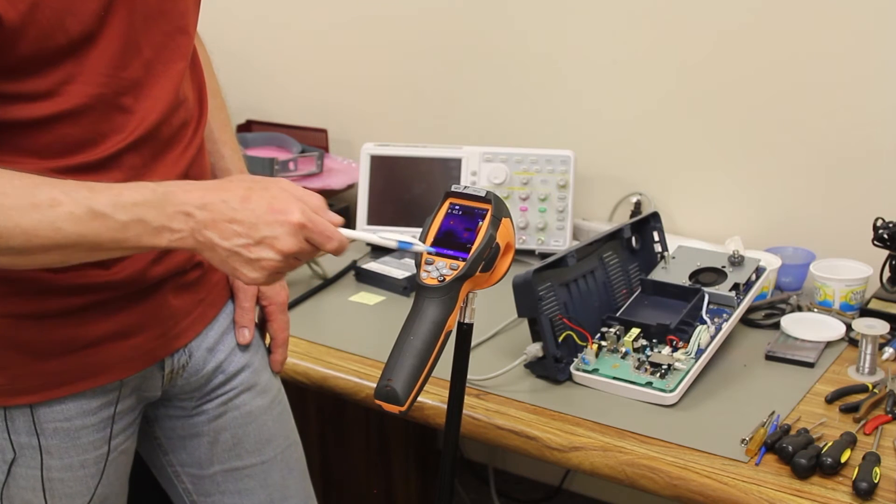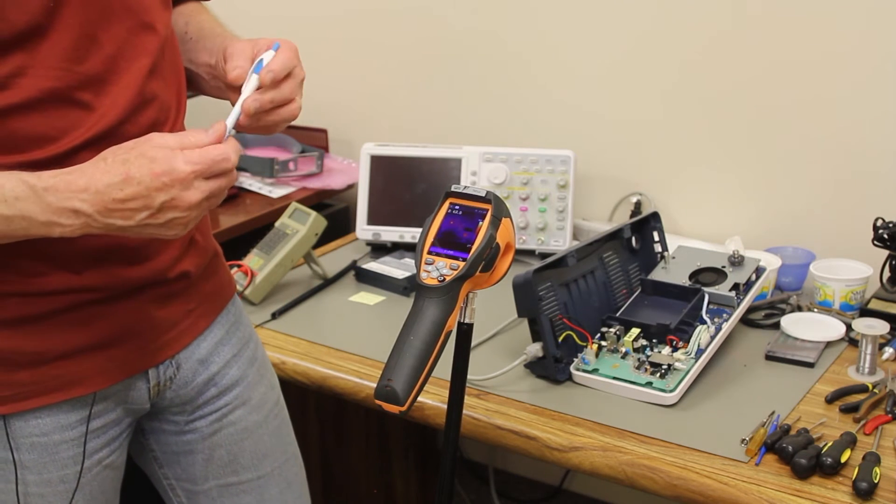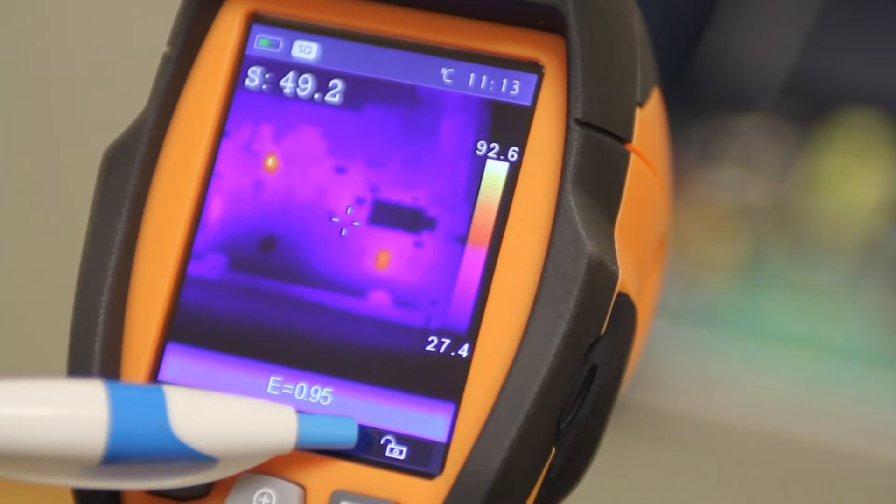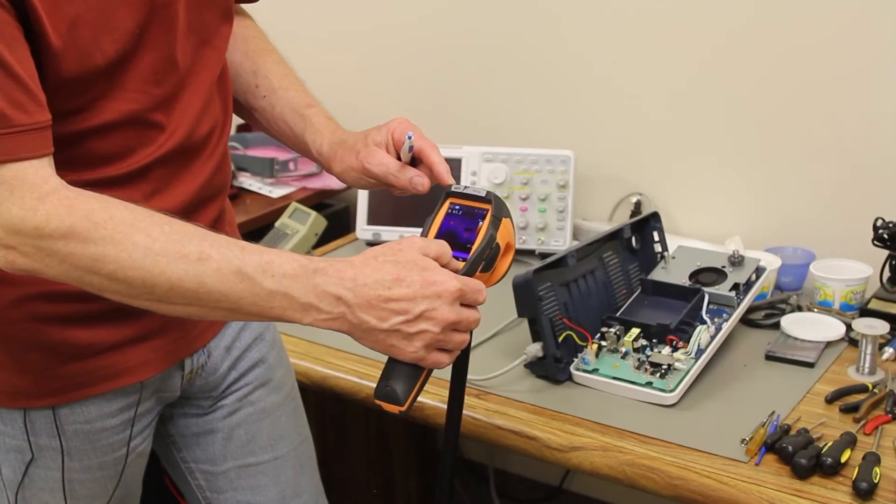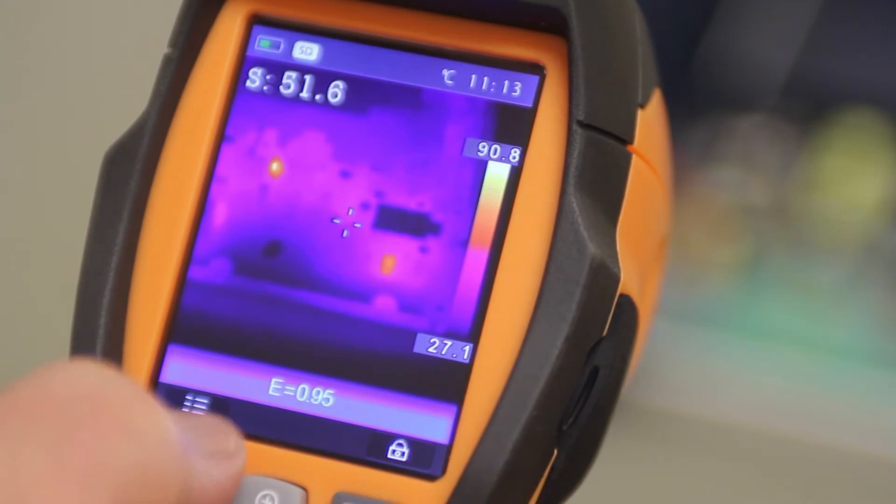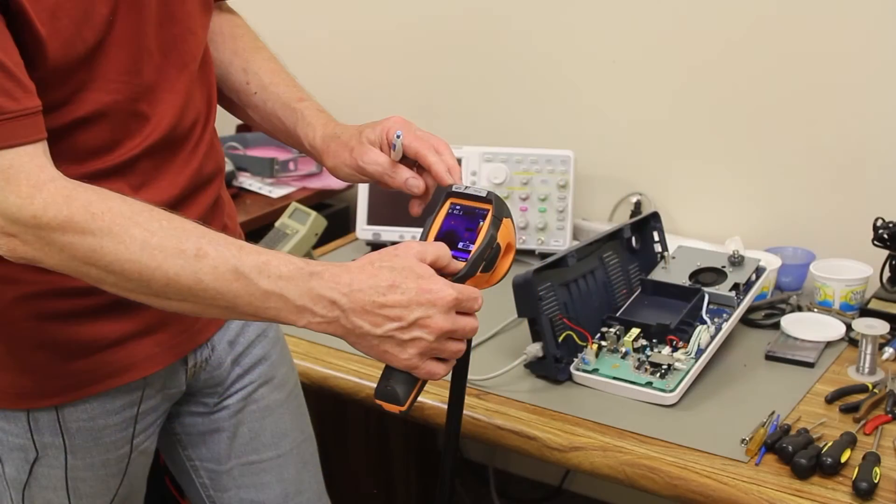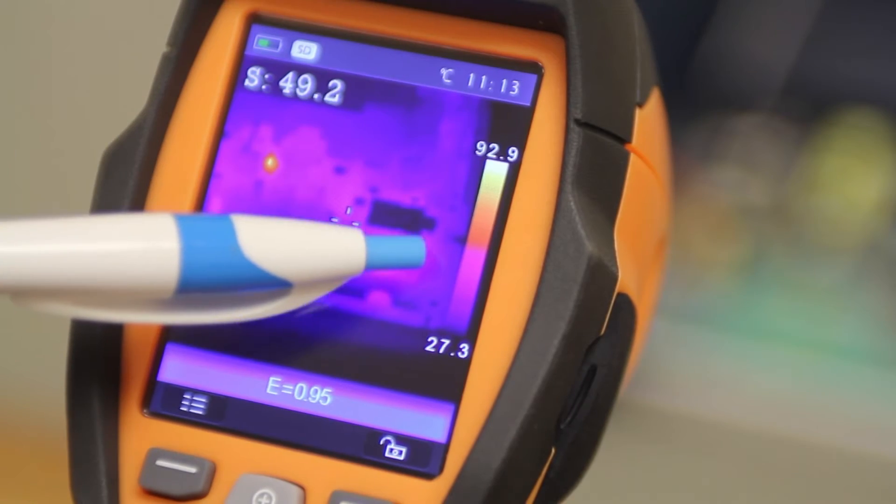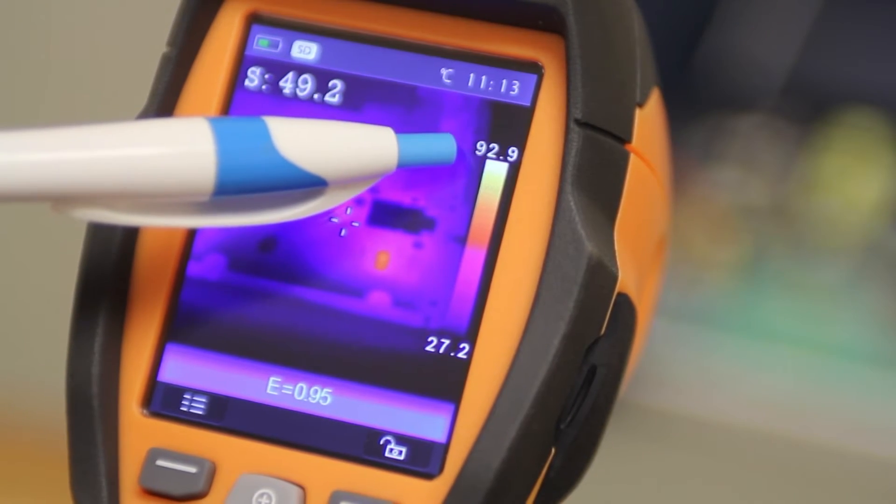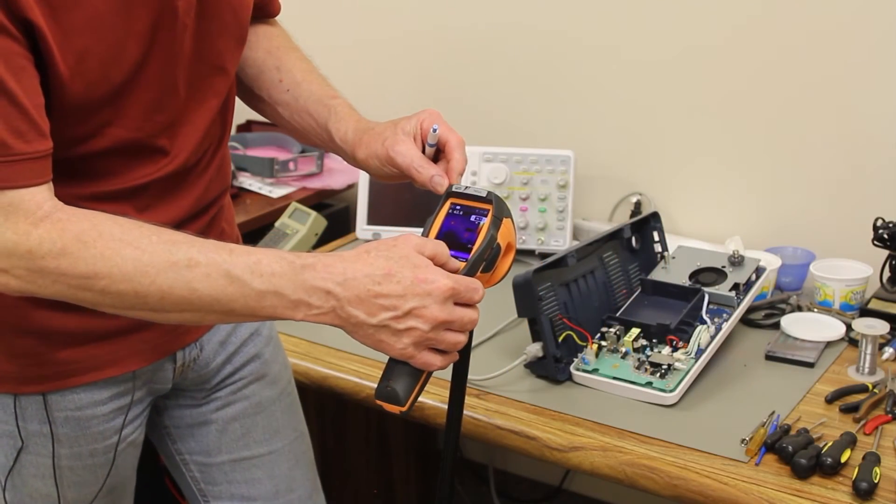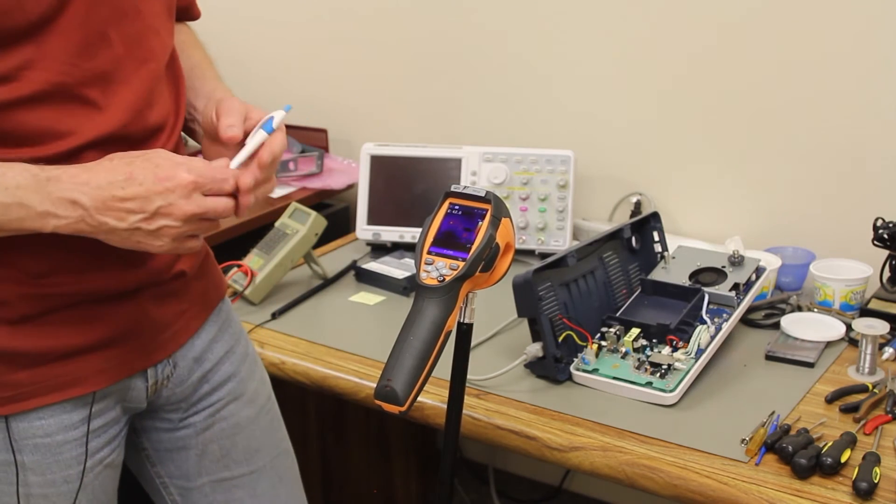This button here is your automatic and manual button. Right now the little key lock symbol is open so I'm in automatic, and if I close this or if I hit the button again the key lock closes and now I'm in manual mode. And if I hold manual mode for a couple of seconds then you get the ability to set your lower limit and your upper limit of the temperature scale that you want to enter manually. So I'm going to cancel out of that and get back to automatic mode.